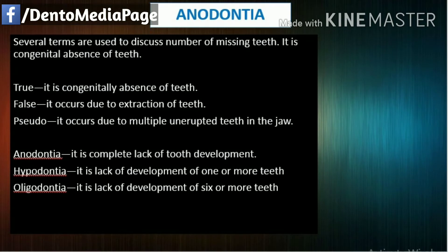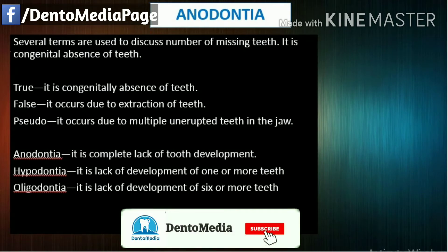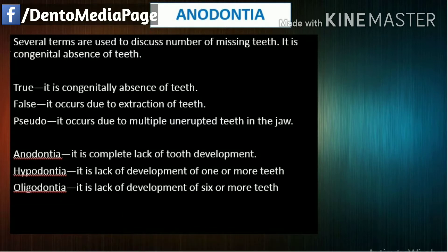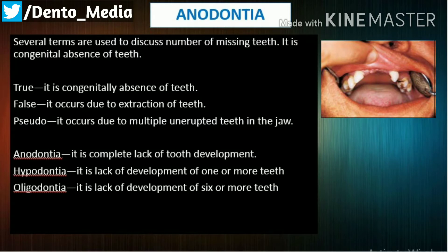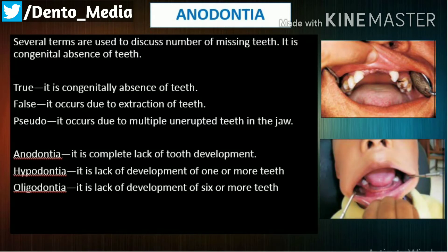Anodontia. Several terms are used to discuss the number of missing teeth. True anodontia is the congenital absence of teeth. False anodontia occurs due to extraction of teeth. Pseudo anodontia occurs due to multiple unerupted teeth in the jaw. Anodontia refers to the complete lack of tooth development. Hypodontia is the lack of development of one or more teeth. Oligodontia is the lack of development of six or more teeth.